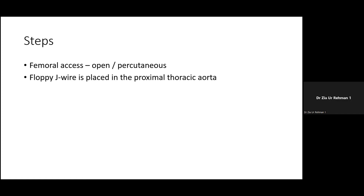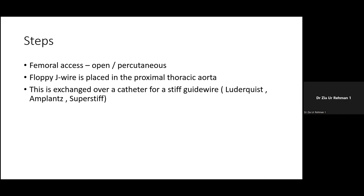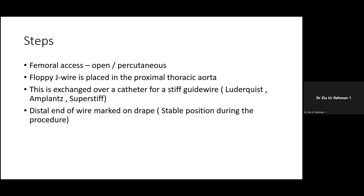After placing the guide wire, decide which side the main body will be placed from. A floppy J wire is placed in the access vessel and advanced into the thoracic aorta. Over that guide wire, exchange for a super stiff guide wire through a catheter. Confirm the J wire is in the proximal thoracic aorta, then advance the catheter, ensuring the super stiff wire goes through the catheter — not beside it — to avoid vessel perforation. Mark the distal end of the super stiff wire on the drape so it remains stable and does not damage the aortic wall.